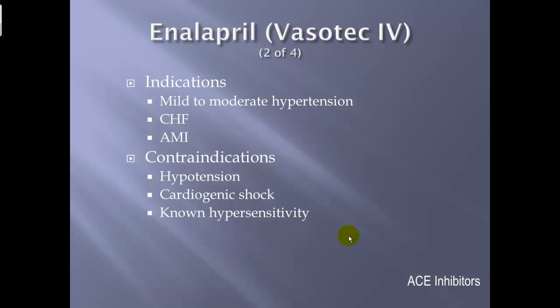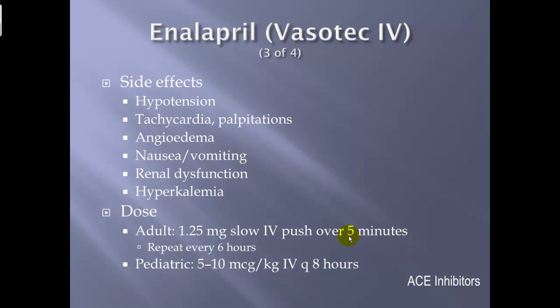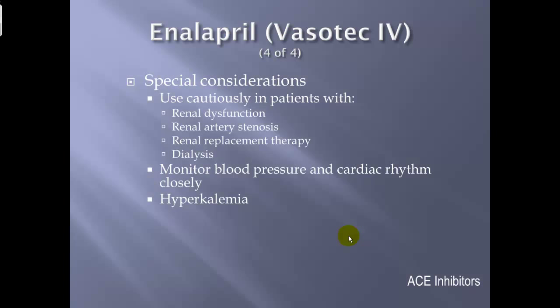Contraindications: hypotension, cardiogenic shock, or known hypersensitivity. Side effects: hypotension, tachycardia, palpitations, angioedema (ACE inhibitors have a notable tendency to cause angioedema as an allergic response), renal dysfunction, and hyperkalemia. Adult dose: 1.25 mg slow IV push over 5 minutes, repeatable every 6 hours. Pediatric: 5 to 10 mcg/kg IV every 8 hours. Special considerations: use cautiously in patients with renal dysfunction, renal artery stenosis, renal replacement therapy, or dialysis; monitor blood pressure and cardiac rhythm closely; watch for hyperkalemia.